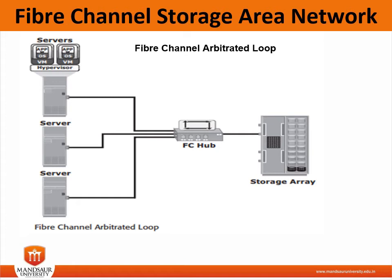The APC-IL configuration has limitations in terms of scalability. Since APC-IL shares the loop, only one device can perform an I/O operation at a time. Each device must wait for its turn to process I/O requests, so overall performance in an APC-IL environment is low. Additionally, APC-IL uses only 8 bits of the 24-bit fiber channel addressing, with the remaining 16 bits reserved, enabling assignment of 127 valid addresses to ports.